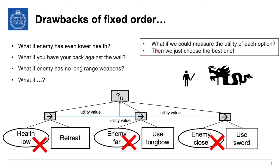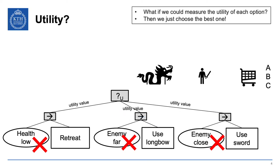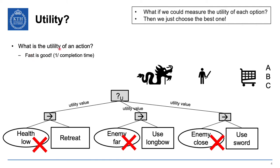This core idea is simple and complex at the same time — because utility can be simple, or it can be immensely complex to decide what action is most useful. What is the utility of an action? That's the key question in utility BTs and utility theory in general. To explore this, we'll pause the dragon example and look at a simpler 'go shopping' example.